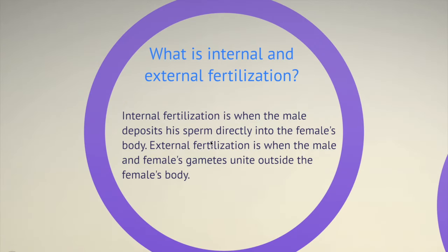We are going to start from what is internal and external fertilization. We've made a slide on this topic so it's easy for you to take notes and grasp the idea. Internal fertilization is when the male deposits his sperm directly into the female's body, meaning fertilization occurs inside the mother's body — not outside. External fertilization is when the male and female gametes unite outside the female's body. The word internal means inside, and external means outside the female body.